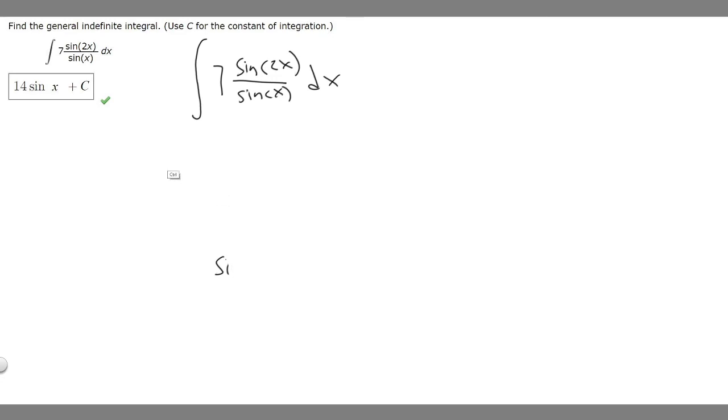Now that we know that, we can simplify this. It's going to be 7, and then we're replacing sin(2x) with 2 times sin(x) times cos(x), all over sin(x) dx.